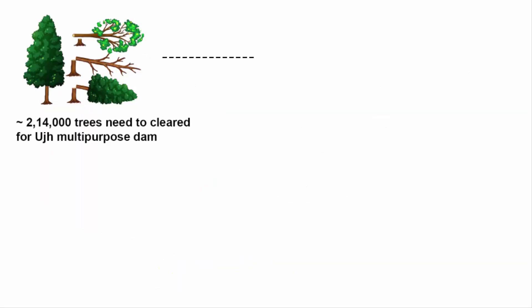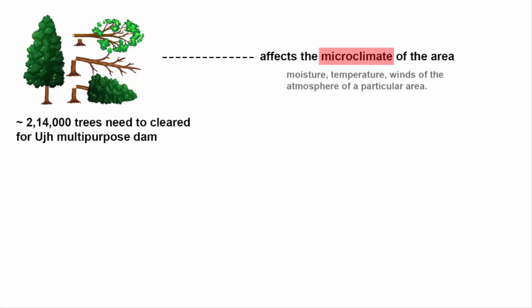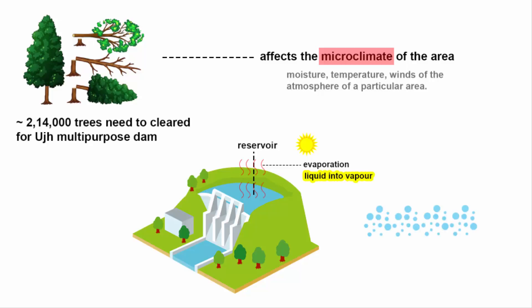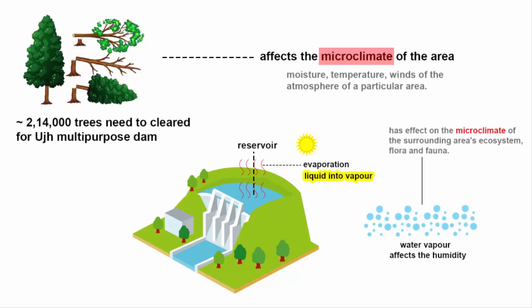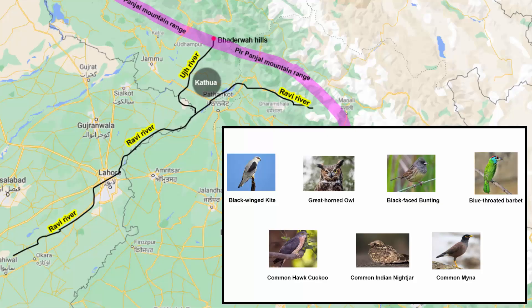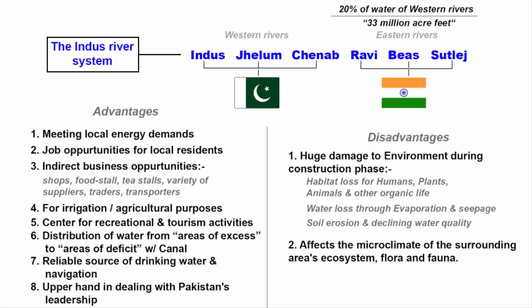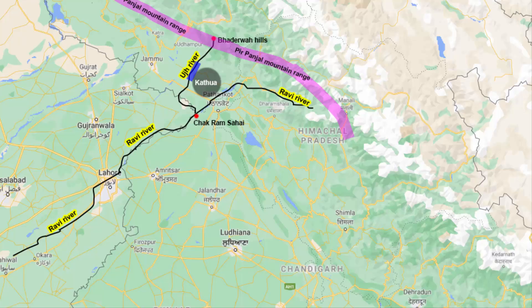Cutting so many trees affects the microclimate of the area — meaning the moisture, temperature, and winds of the local atmosphere. When so much water is stopped by the dam, a reservoir forms, leading to increased evaporation. More water vapor in the atmosphere affects humidity and, in turn, the microclimate, ecosystem, flora, and fauna of the surrounding region. The area is home to various birds and mammals that will be impacted. These are two sides of the same coin, and this video aimed to provide a broad overview of the dam and its implications.